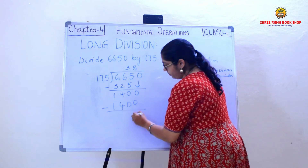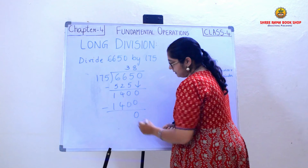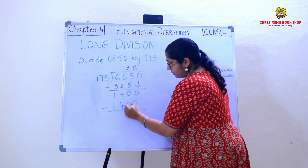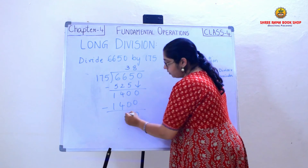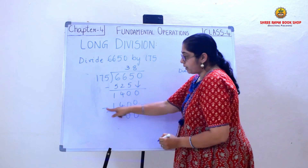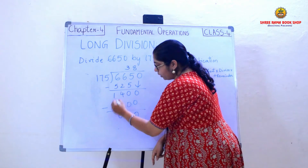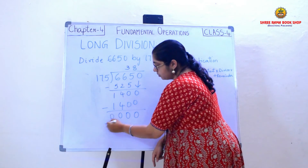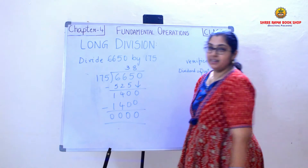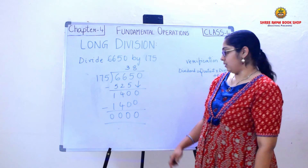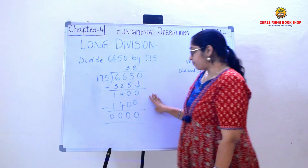Directly I will subtract now. 0 minus 0 is 0, 0 minus 0 is 0, 4 minus 4 is 0, and 1 minus 1 is 0. So the remainder is 0.